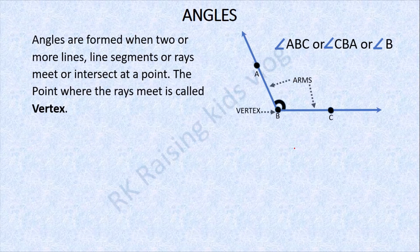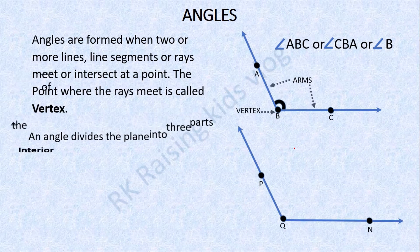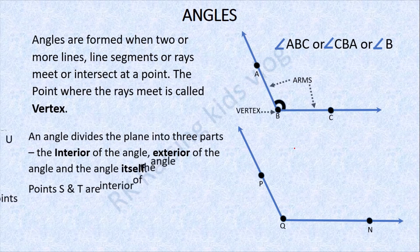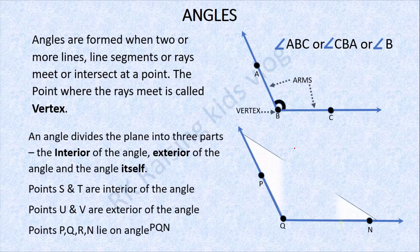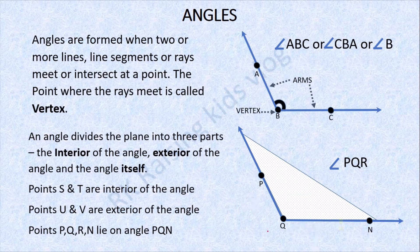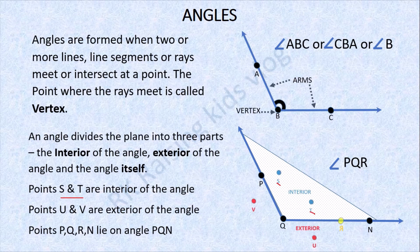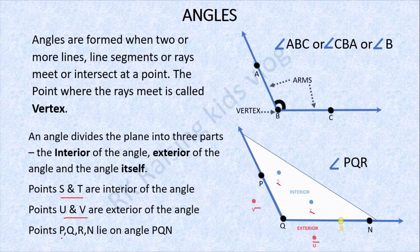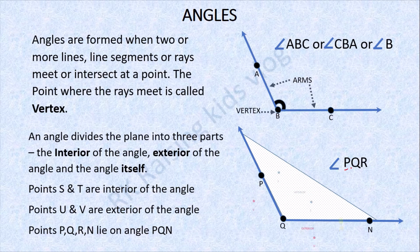An angle divides the plane into three parts: the interior of the angle, the exterior of the angle, and the angle itself. The points S and P are in the interior of the angle, while the points U and V are in the exterior. The points P, Q, R, N lie on the angle. The angle is named as angle PQR, and the angle symbol is used to denote it.